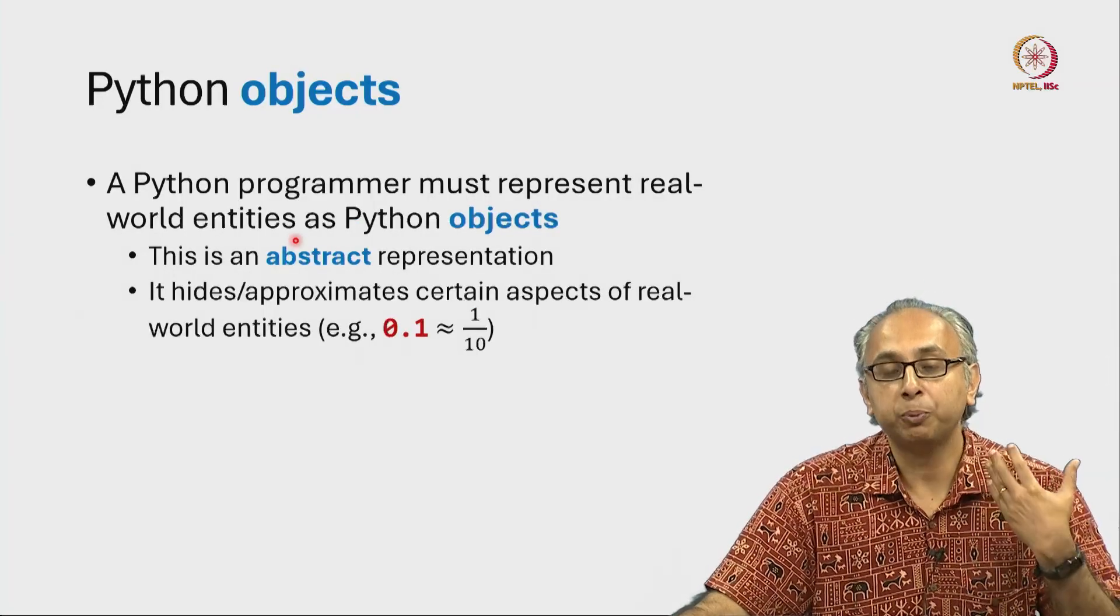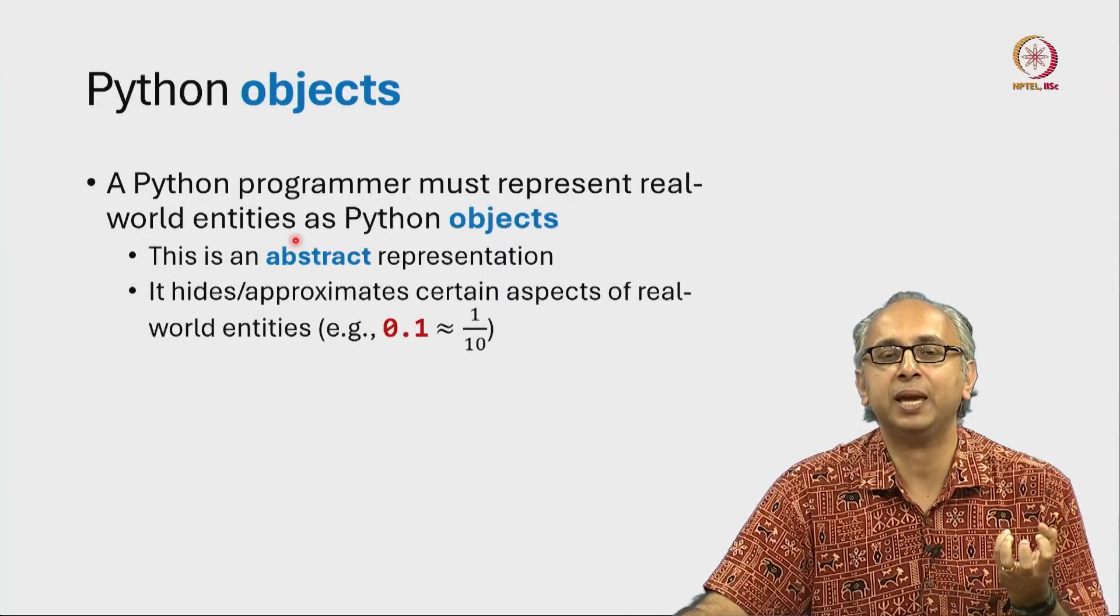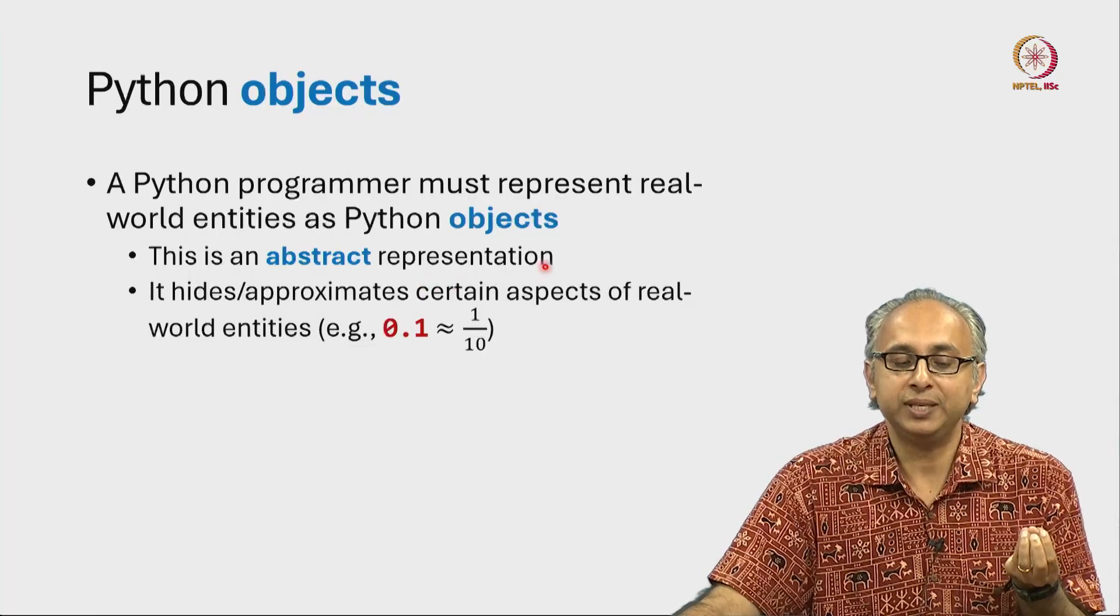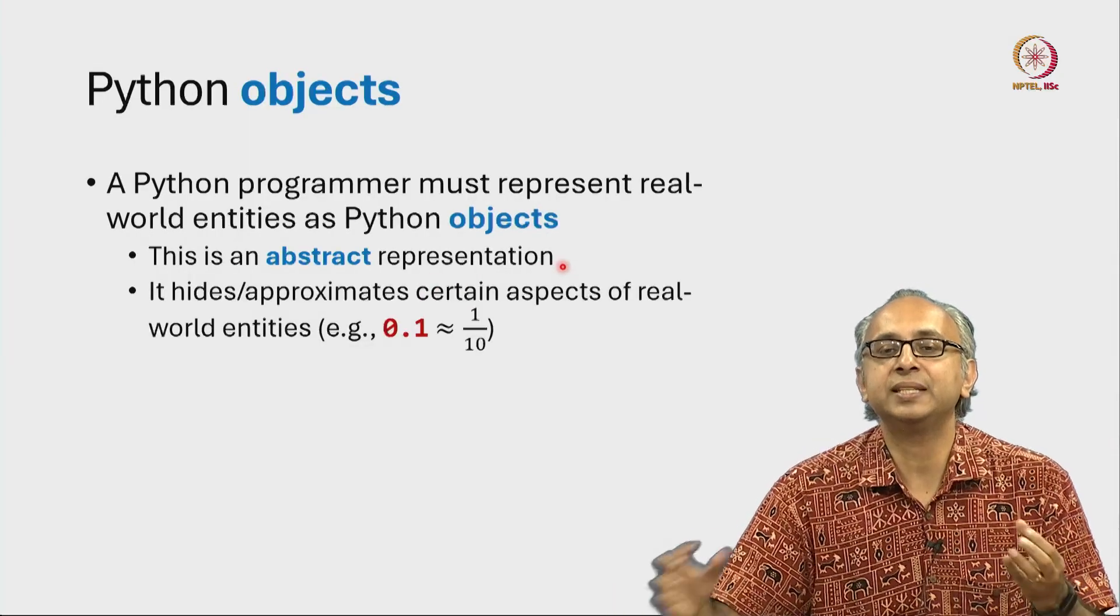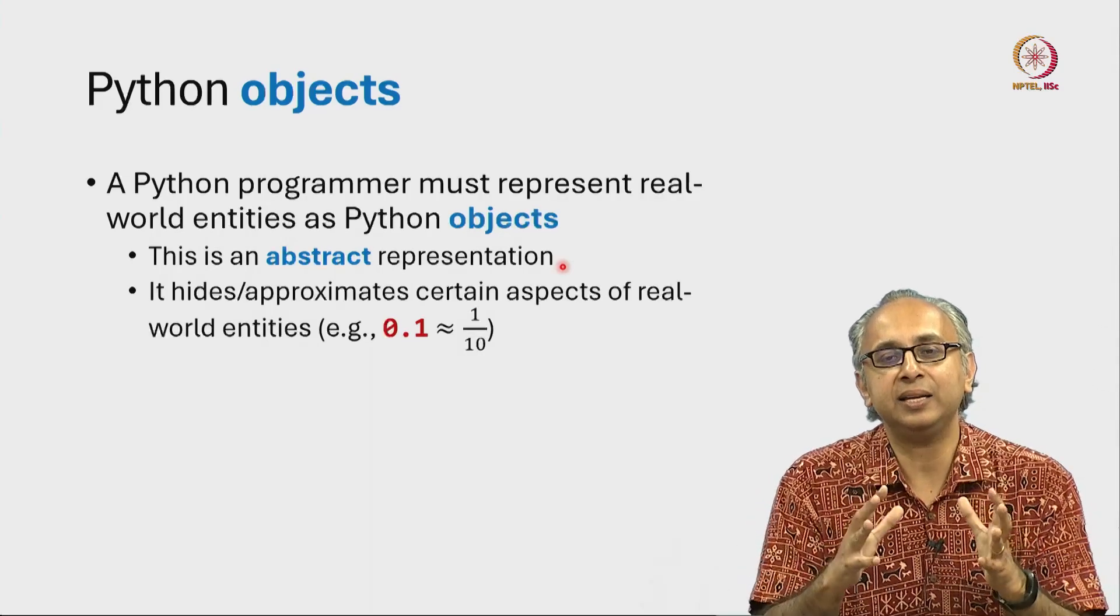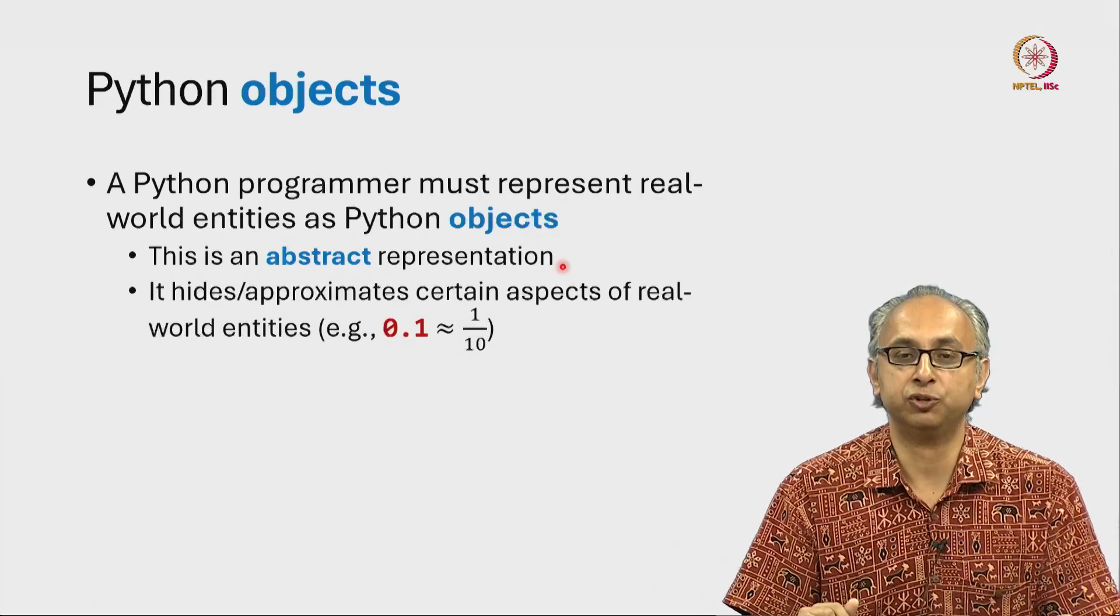But what we will see is every Python object will have to make certain approximations. So we say that a Python object is an abstraction. An abstraction hides or approximates some real-world features.